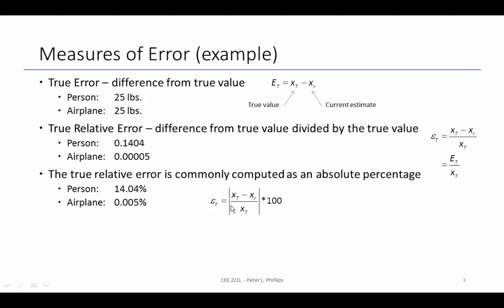So we'll just take the absolute value and multiply it by 100. So looking at the true relative error for our example here, for the person, it's 14.04 percent, which is rather large. But when we look at the airplane, 25 pounds of error on a half million pound airplane is 0.005 percent, which is probably insignificant for most calculations.